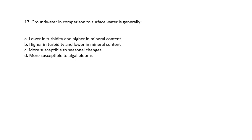Question 17: Groundwater, in comparison to surface water, is generally low in turbidity and higher in mineral content, higher in turbidity and lower in mineral content, more susceptible to seasonal changes, or more susceptible to algae blooms. The answer is A — lower in turbidity and higher in mineral content.